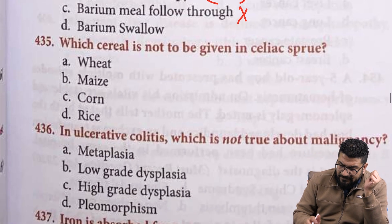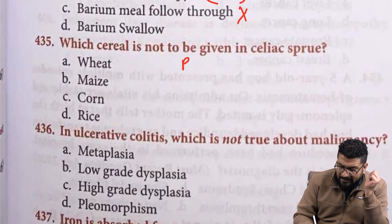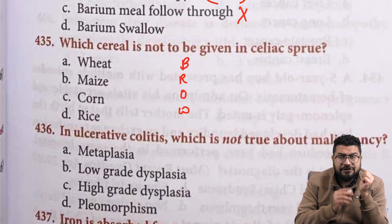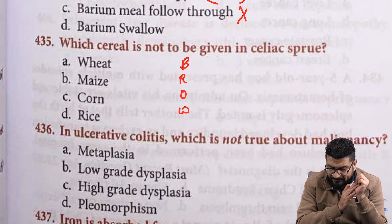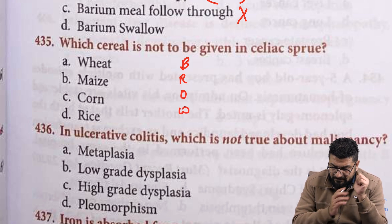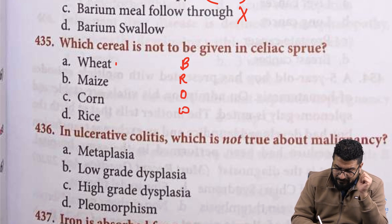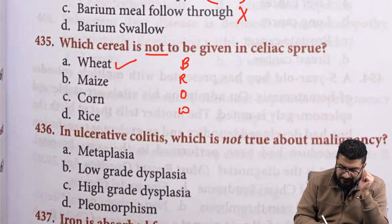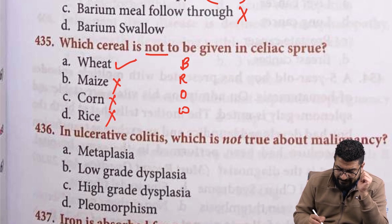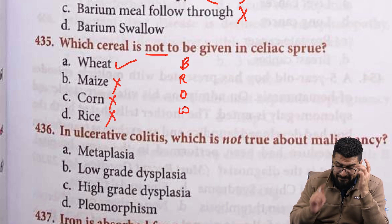Cereals not to be given in celiac sprue: barley, rye, oat, and wheat should not be given. Wheat should not be given. Maize, corn, and rice we can give. Remember: R is for rye.